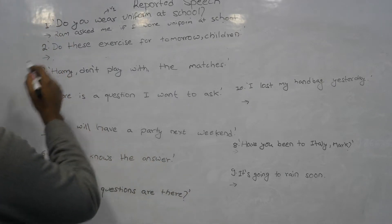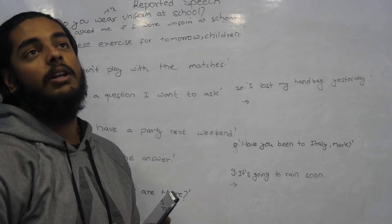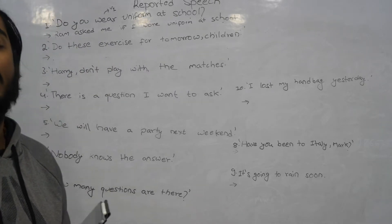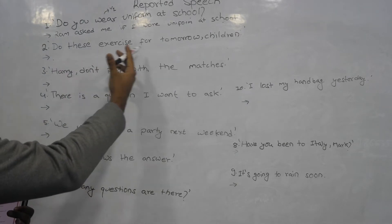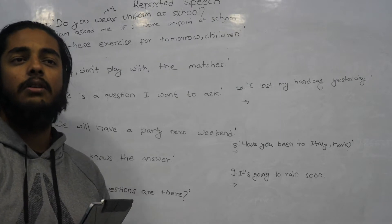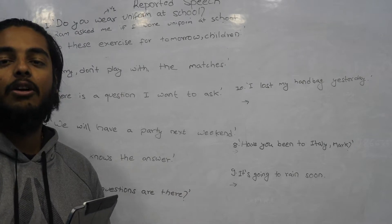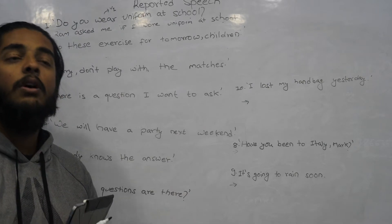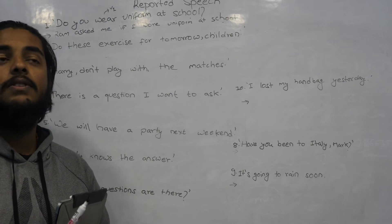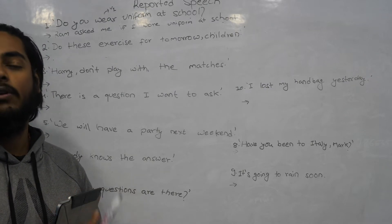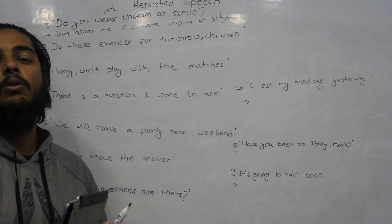'Do these exercises for tomorrow's children.' Which type of sentence is this? It is an imperative sentence. Imperative sentence means command, request, or order. Examples: get out, shut up, open the window, close the door.